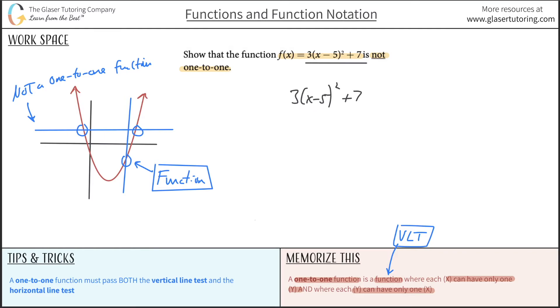So let's square this term. So that's (x - 5)(x - 5) plus 7. We're going to foil this out. So that's going to become x² minus 5x minus 5x plus 25. That's then plus 7.